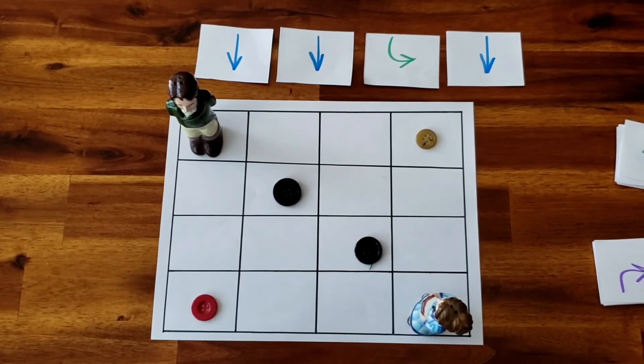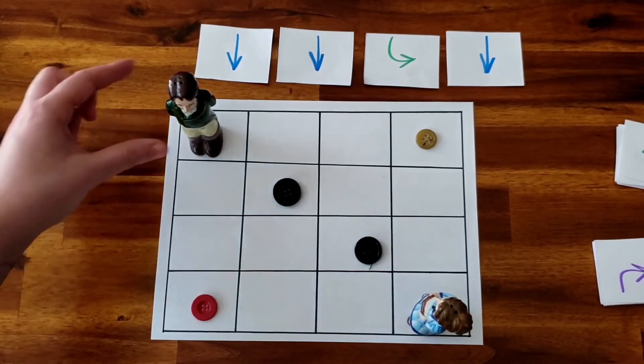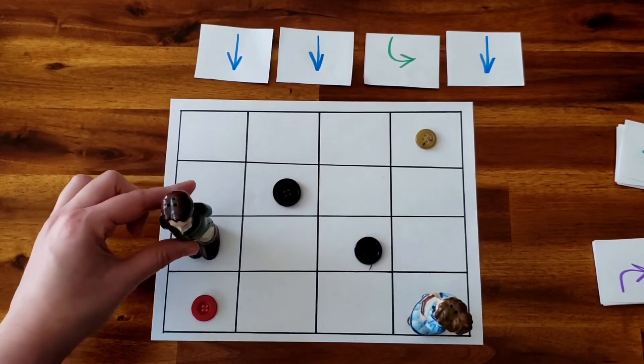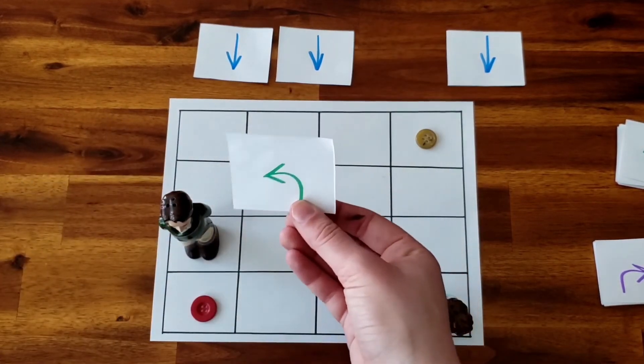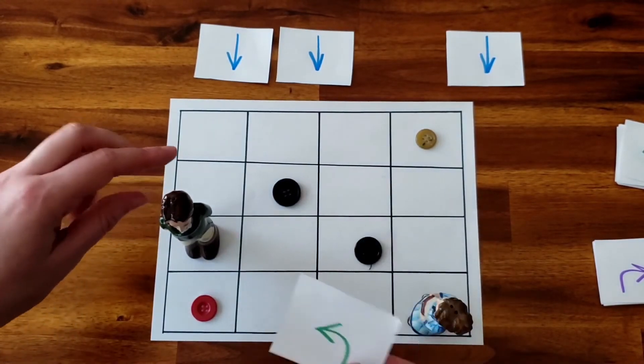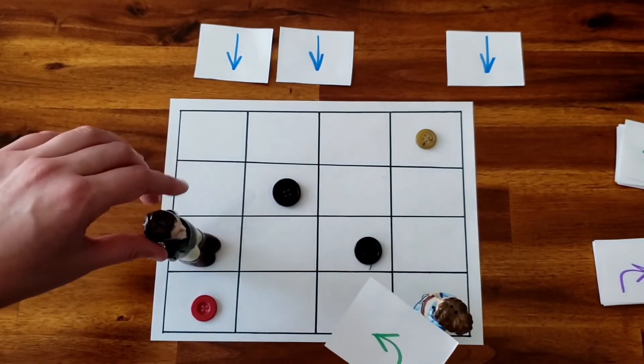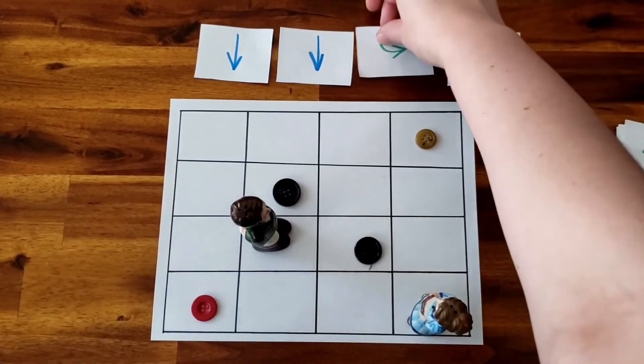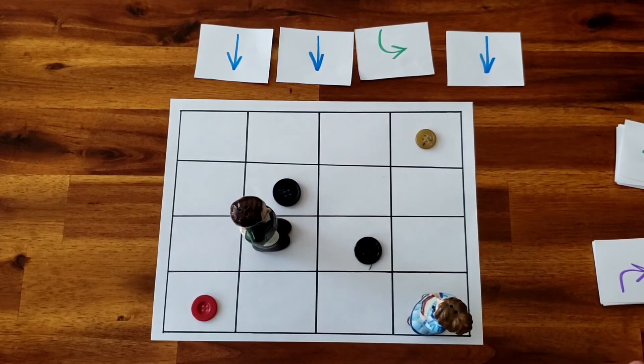Now this isn't going to get me all the way there, but it will get me started. So we go forward, forward, turn to the left. Now remember this is the object's left. So, turn to the left, and then forward again. Alright, so far so good.